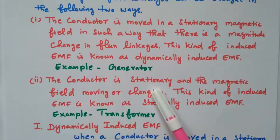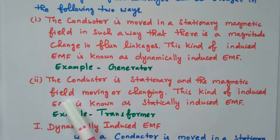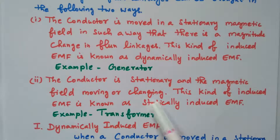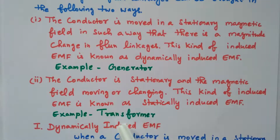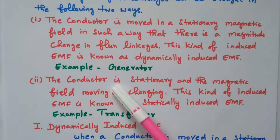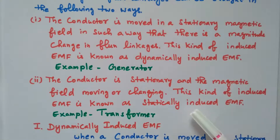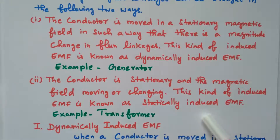In the second case, the conductor is stationary but the magnetic field is moving or changing. Magnetic flux linkage is moving from one coil to another coil, but the conductor remains stationary. This kind of induced EMF is known as statically induced EMF. It is applicable in the transformer, which is a static device. The conductor is also stationary; only the magnetic flux moves from primary coil to secondary coil, so it is termed statically induced EMF.